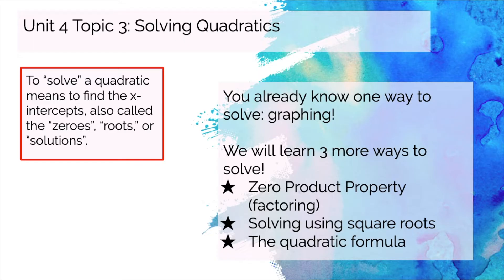You already know one way to do this, which is to graph your equation and then look at the x-intercepts. We're also going to learn three more ways: the zero product property, which is also known as factoring; solving by square roots or completing the square; and finally the quadratic formula if all else fails.